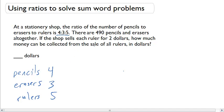Now, there are 490 pencils and erasers all together. If the shop sells each ruler for $2, how much money can be collected from the sale of all rulers in dollars?